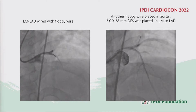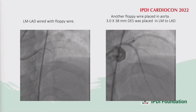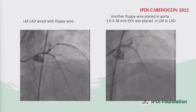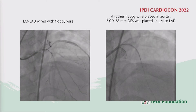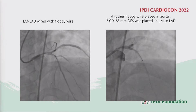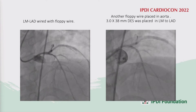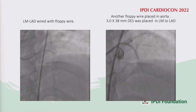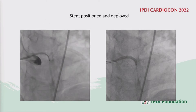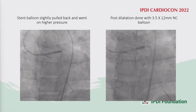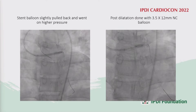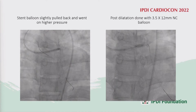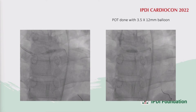We offered him angioplasty because he is a migrant worker and has to return to Saudi Arabia. After wiring, we placed a stent — a 3 x 32 mm drug-eluting stent — from the left main to the LAD. The stent was positioned and deployed, the stent balloon was slightly pulled back and inflated at high pressure, followed by post-dilation with a 3.5 x 12 mm non-compliant balloon.